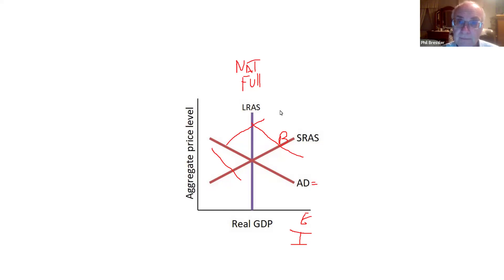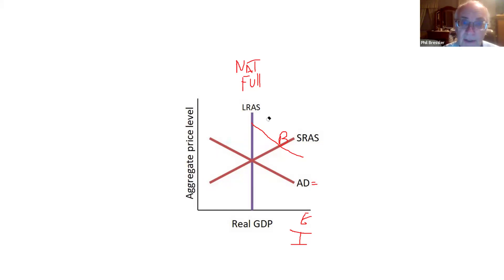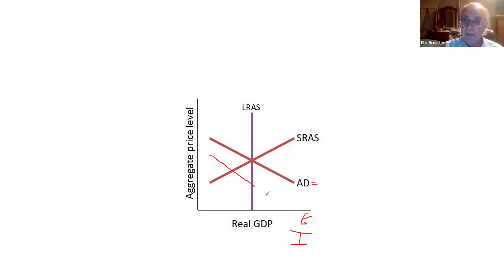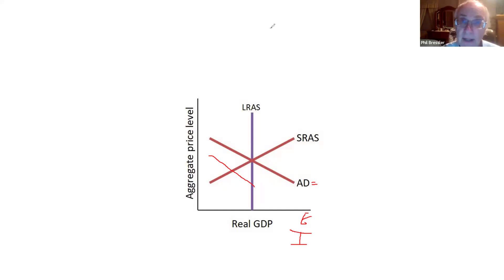What I'm going to do is go over how to fix cyclical unemployment, or fix a recessionary gap. You would fix an expansionary gap the opposite way. So a recessionary gap like this, you're going to fix with expansionary monetary policy.